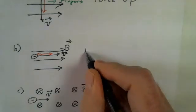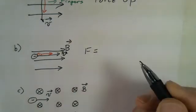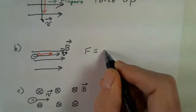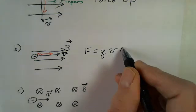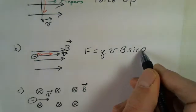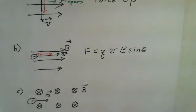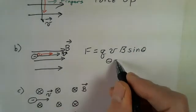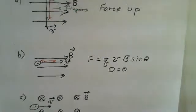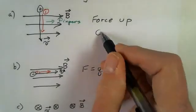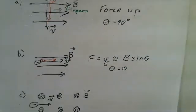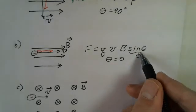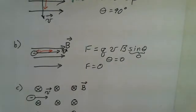Let's further inspect the equation. The magnetic force depends on: charge, velocity of the particle, magnetic field, and the sine of the angle between the velocity and the magnetic field. In this case, theta is zero. In the previous example, theta was 90 degrees. The sine of zero produces a factor of zero, so in this situation there is no magnetic force on this charged particle.